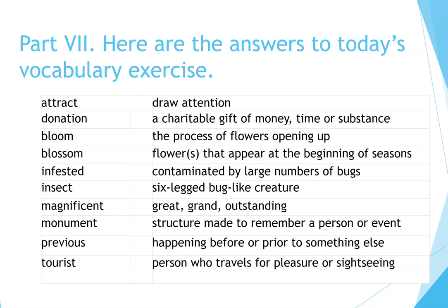Part 7. Here are the answers to today's vocabulary exercise. Attract: draw attention. Donation: a charitable gift of money, time, or substance. Bloom: the process of flowers opening up. Blossom: flowers that appear at the beginning of seasons. Infested: contaminated by large numbers of bugs. Insect: six-legged bug-like creature. Magnificent: great, grand, outstanding. Monument: structure made to remember a person or event. Previous: happening before, or prior to, something else. Tourist: person who travels for pleasure or sightseeing.